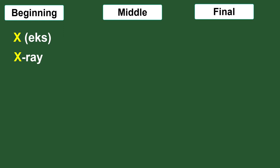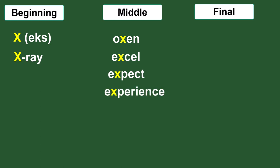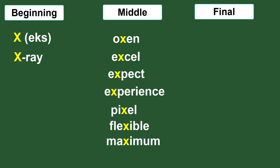We're going to look at beginning, middle, and final positions. Please feel free to pronounce these words as you listen. Beginning position — of course we have the letter X, and X-ray. Middle position: oxen, excel, expect, experience, pixel, flexible, maximum, and Roxanne — this is a woman's name.